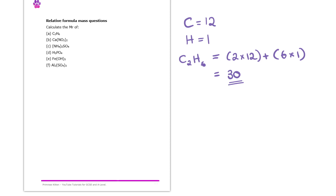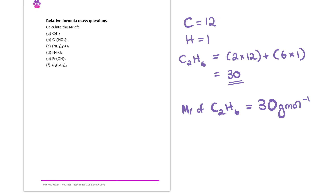That tells us that the Mr of this ethane, C₂H₆, is 30 grams per mole. That is the answer to question A.